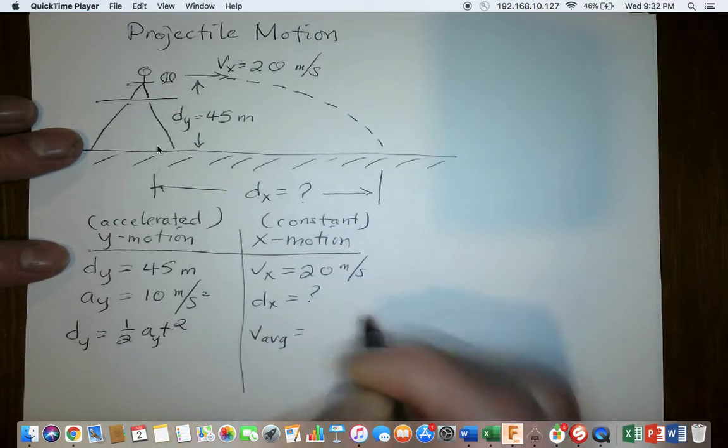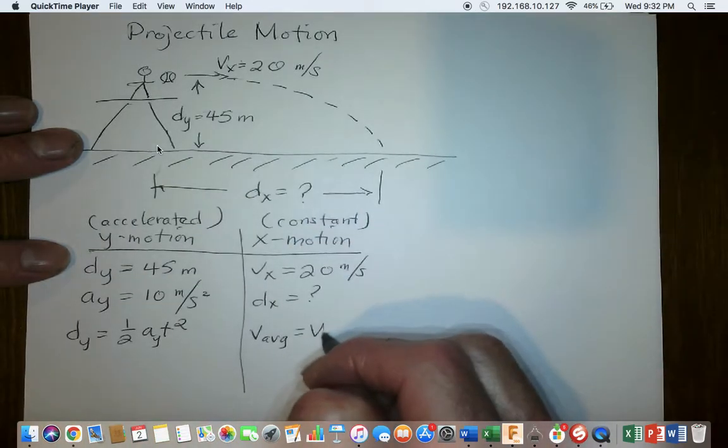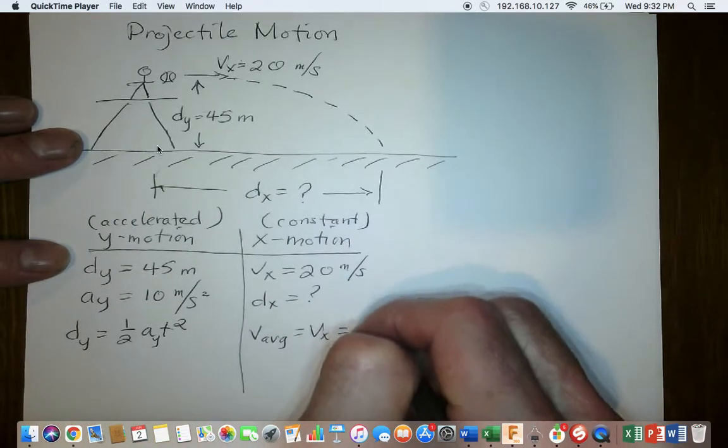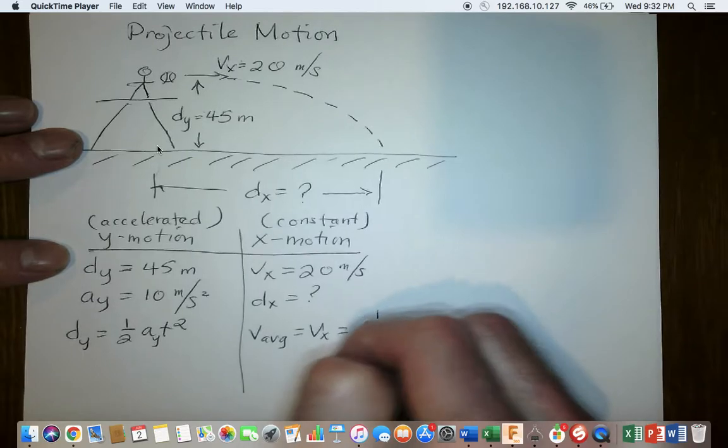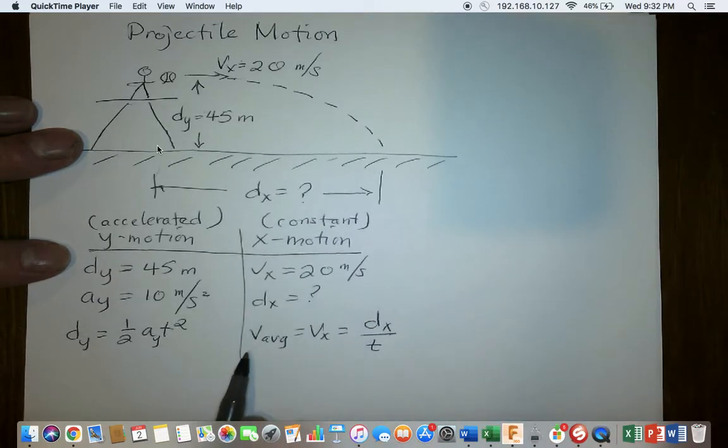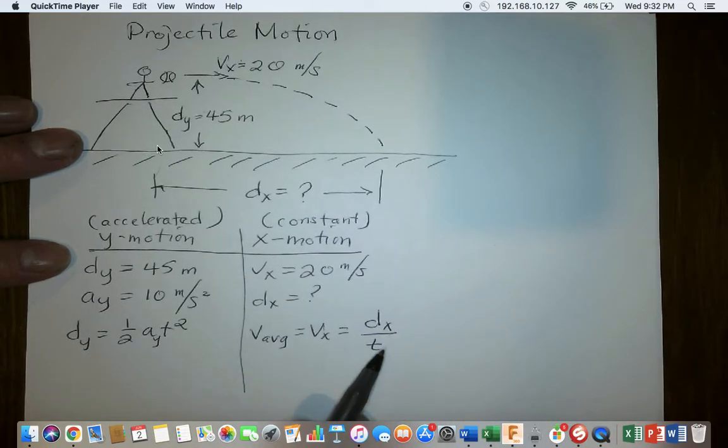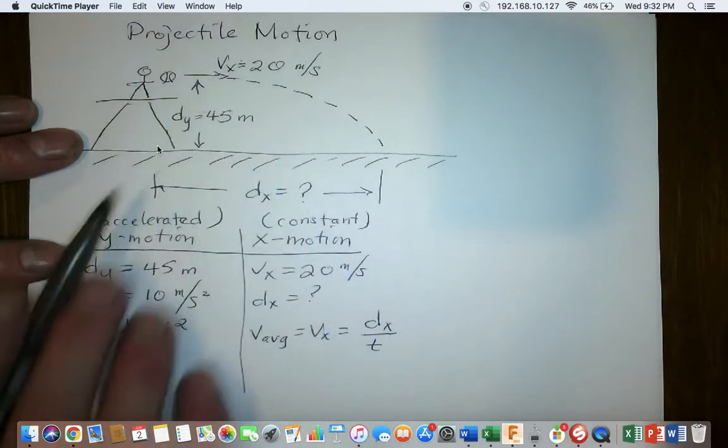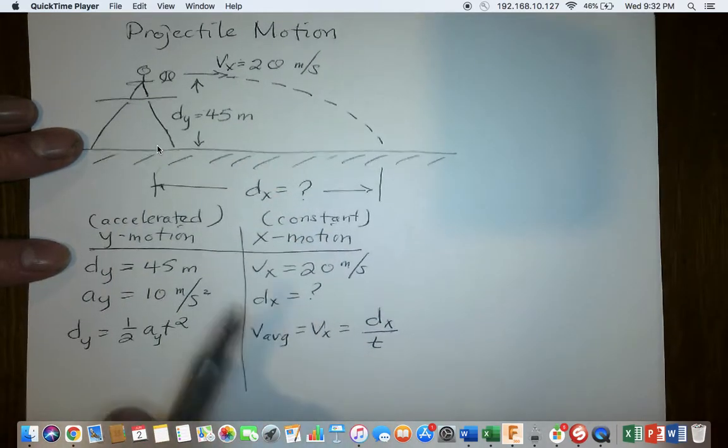Average velocity, in this case in the X direction, is equal to the X velocity, which is the distance in the X direction divided by time. This is just average velocity. It's distance over time, but because the motion is constant, we can substitute these.